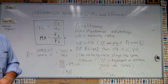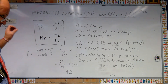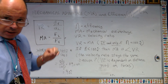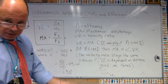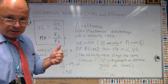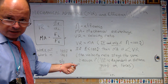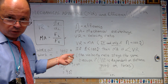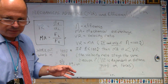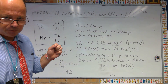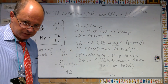Pause the video if you need to and think about these ideas. Velocity ratio is about distances — distance effort over distance load — and mechanical advantage is about force load over force effort. We'll do lots of examples, and hopefully by the end of all this, you'll be a ninja at this. See you next lesson.